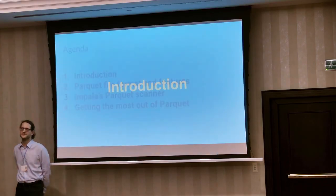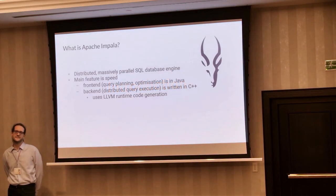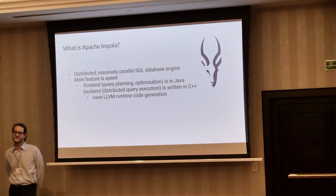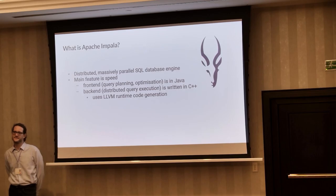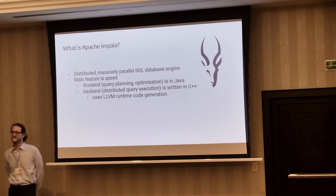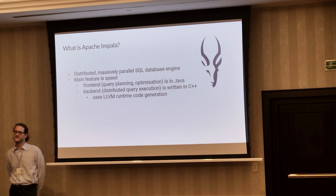What is Apache Impala? It is a distributed massively parallel SQL database engine whose main feature is speed. It consists of two main parts. One of them is the front end, which takes care of query planning and optimization. This part is written in Java.